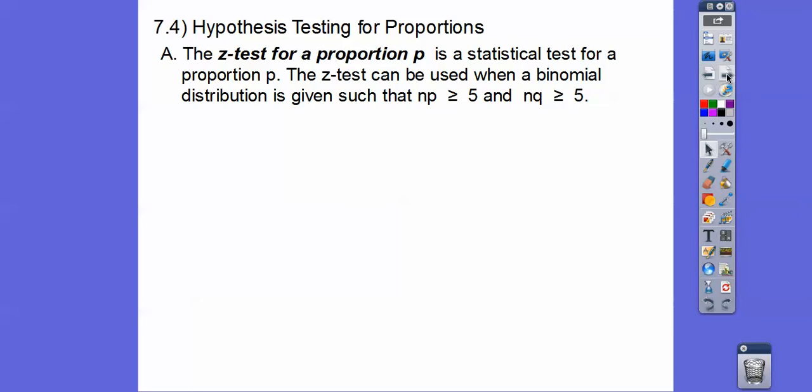The Z test for proportion P is a statistical test for a proportion. We do T tests for means, but for proportions it's always a Z test. For proportions - success/fail, yes/no, on/off, agree/disagree - these are binomial things. We always do Z tests on proportions when the sample size times P is greater than or equal to 5, and so is the sample size times Q.